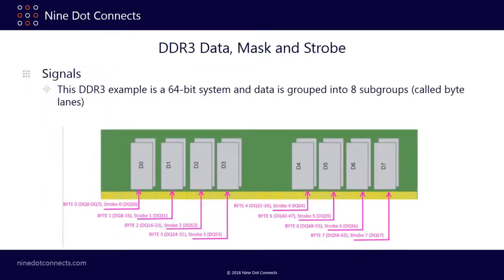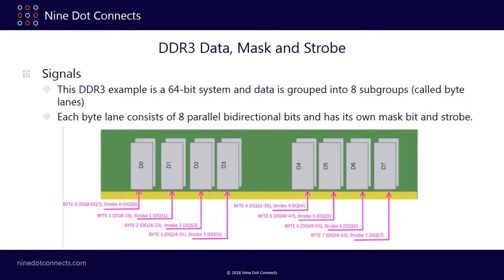Now let's talk about the data mask and strobe group. In this SODIMM DDR3 example of a 64-bit system, signals are grouped into eight subgroups called byte lanes. Each byte lane consists of eight parallel bidirectional bits with its own mask bit and strobe. So byte 0 has DQ0 through DQ7, strobe DQS0, and mask DM0. The next chip in sequence would be DQ8 through DQ15, DQS1, and DM1, following suit all the way to the eighth byte.